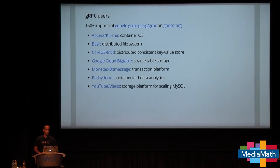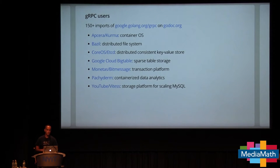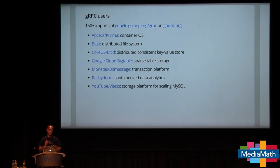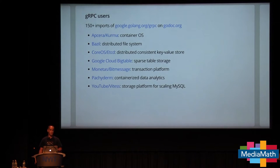GRPC already has a fair number of users. It was released earlier this year and very recently went to beta. We have 150 imports on godoc.org. Users include systems for: a container OS, a distributed file system, a distributed key-value store, sparse table storage, a transaction platform, data analytics, and MySQL storage scanning. These are real systems that need to scale and run efficiently. I'll call out Google Cloud Bigtable — a lot of the Google Cloud APIs are going to lean heavily on GRPC.